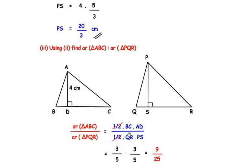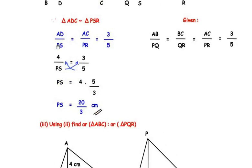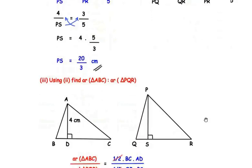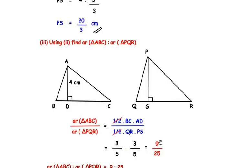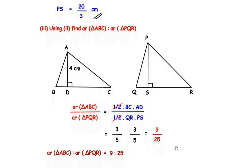From the given data, BC over QR is 3 over 5, and we found that AD over PS is also 3 over 5. So the ratio becomes 3 over 5 times 3 over 5, giving us 9 over 25. Therefore the ratio of areas of the two triangles is 9 is to 25. Now let us move on to the OR question.